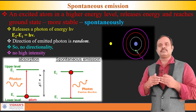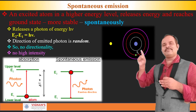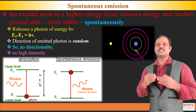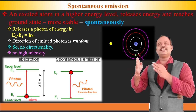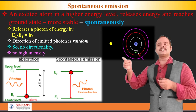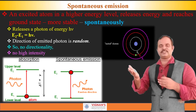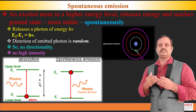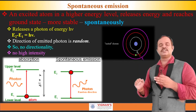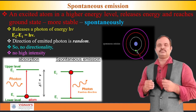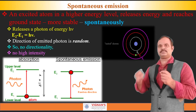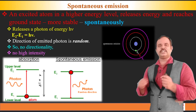In the spontaneous emission, please note that every energy level in the atom will have a characteristic lifetime. That means, if the atom is in that particular energy level, it can stay until the lifetime. Once the lifetime is completed, the atom from the higher energy state de-excites to the ground state on its own by releasing a photon. This process is called spontaneous emission. In spontaneous emission, the photon can emit randomly in any direction — there is no restriction.